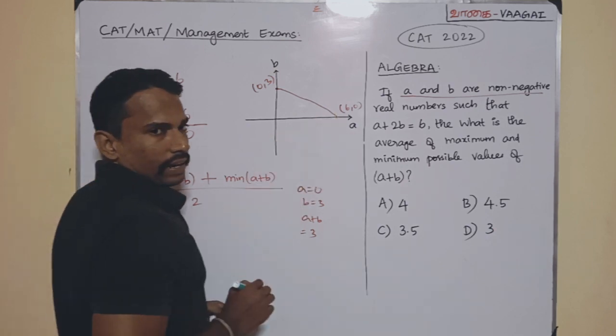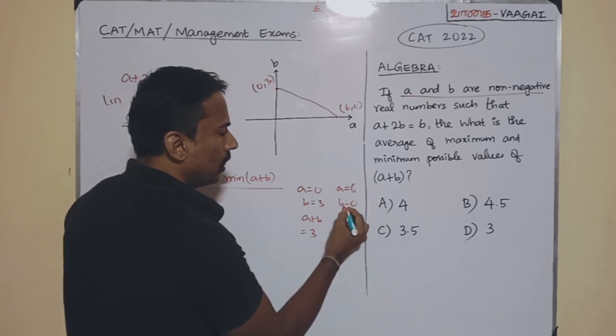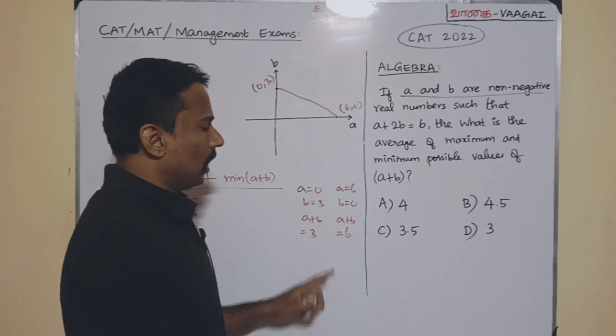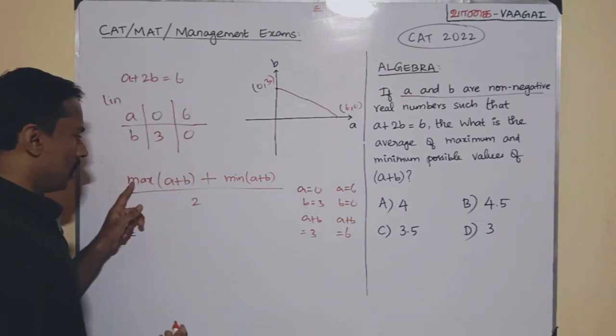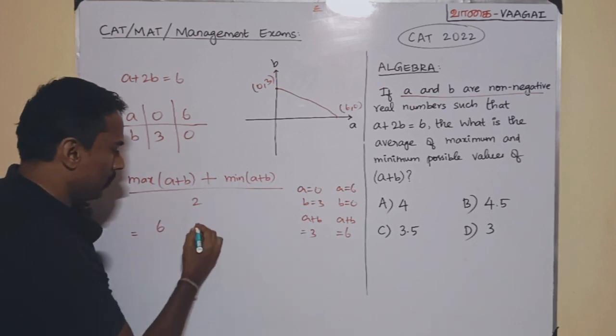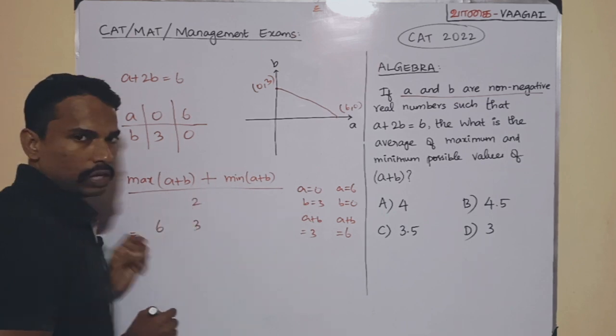And here, the next one, take this point, A is 6 and B is 0. Now, A plus B will be, A plus B will be 6 plus 0, which will be 6 only. Now, this will be the maximum value A plus B can take. So, it is very simple. Maximum of A plus B will be 6 and minimum of A plus B will be 3. So, that means we are supposed to find the average of these two numbers only.